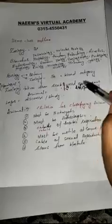Zoology itself is a broad category. What is the etymology of zoology? The word zoology is taken from a Greek word, zoon, which means animal, and logos, which means study. When we are studying about an animal, we are studying zoology.